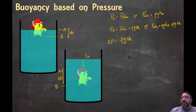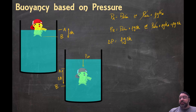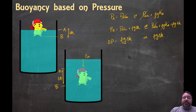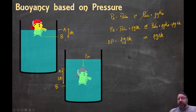In the second case, both sides have atmospheric pressure and rho*g*H_A, so those cancel too, and the difference is again just rho*g*delta H. So it really doesn't matter which version we use — whether partially or fully submerged, the difference in pressure from top to bottom is rho*g*delta H.